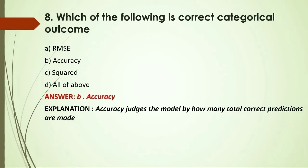MCQ: Which of the following is the correct categorical outcome? Options: A) RMSE; B) Accuracy; C) L2; D) All of them. Answer: B, accuracy, because accuracy judges the model by how many total correct predictions can be made.